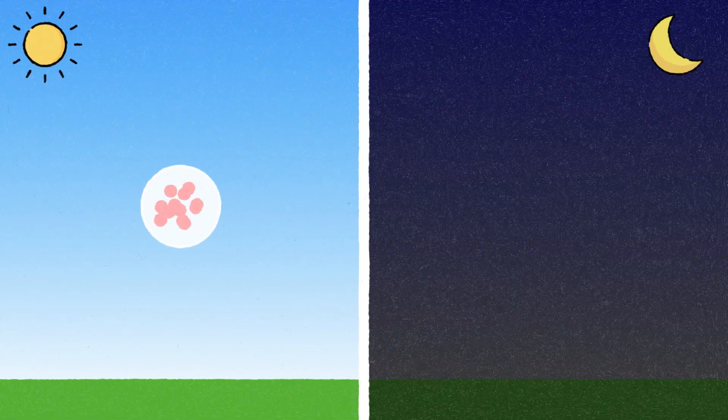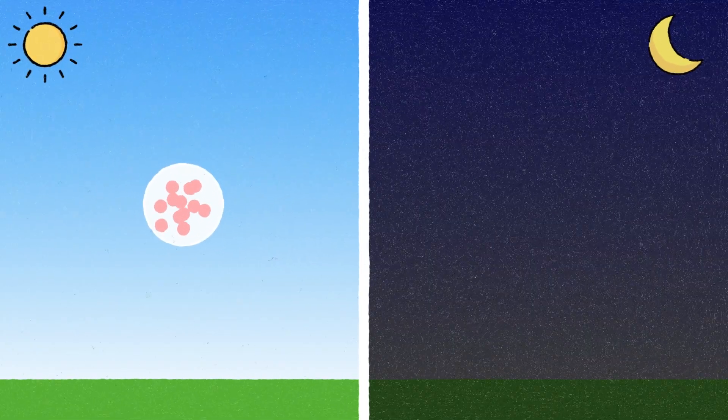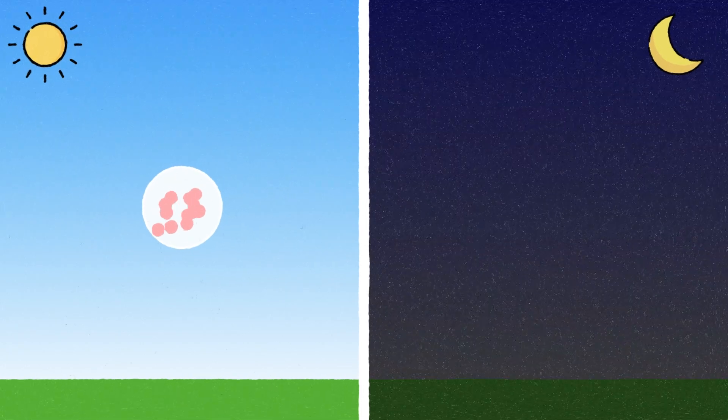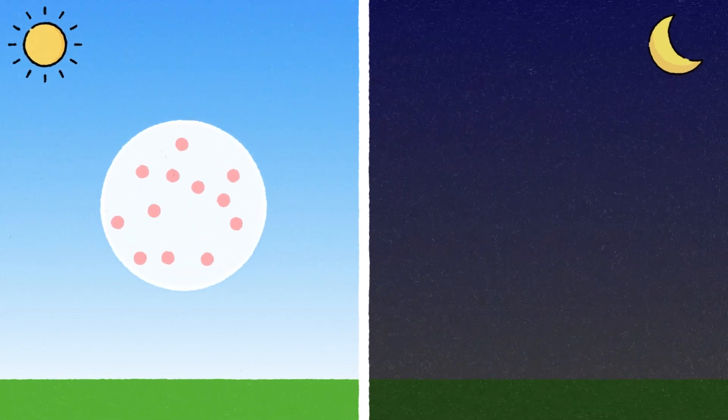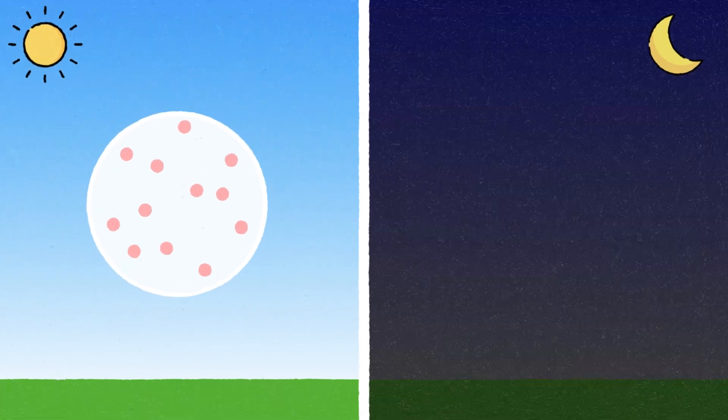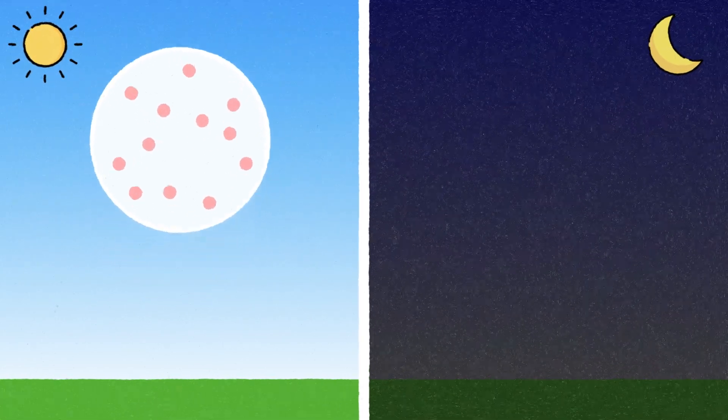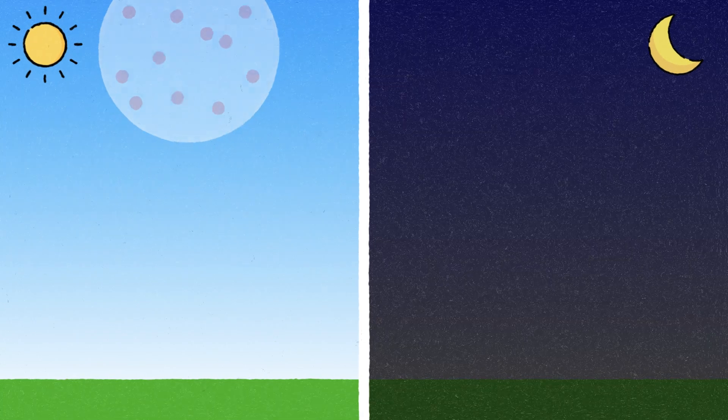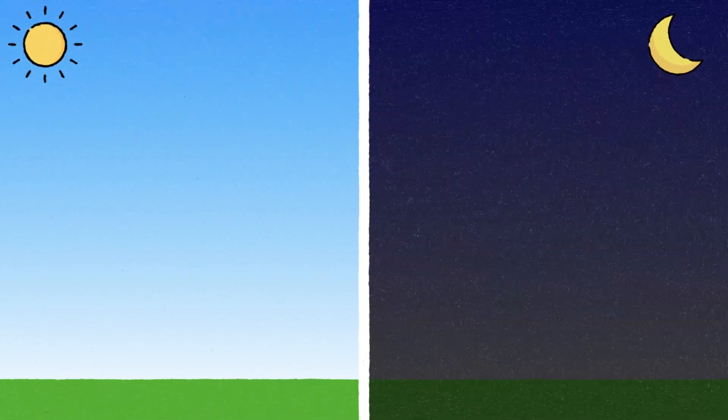Think of air as many tiny invisible balls called molecules. When air heats up, these tiny balls start moving very quickly and spread out. Since they are more spread out, the air becomes lighter and floats up, just like a hot air balloon floating into the sky.